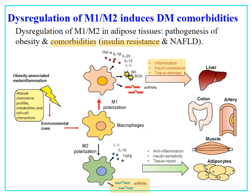Dysregulation of M1-M2 of adipose tissue induces DM comorbidity. Dysregulation of M1-M2 in adipose tissue will induce pathogenesis of obesity and comorbidity of DM such as insulin resistance and non-alcoholic fatty liver disease. If the macrophage of adipose tissue undergoes M1 polarization, the M1 macrophage will produce TNF-α, IL-1β, IL-23, IL-12 and will induce inflammation.